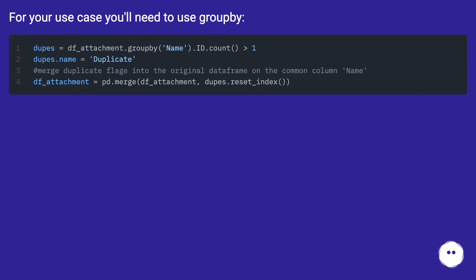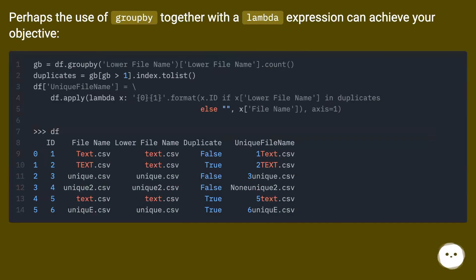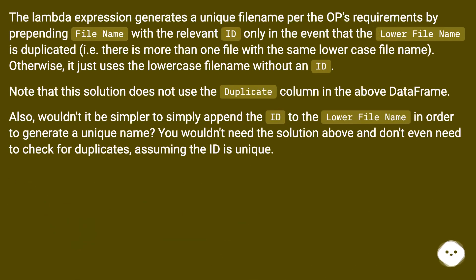For your use case you'll need to use groupby. Perhaps the use of groupby together with a lambda expression can achieve your objective. The lambda expression generates a unique filename for the requirements by prepending the filename with the relevant ID only in the event that the lower filename is duplicated, i.e. there is more than one file with the same lowercase filename. Otherwise, it just uses the lowercase filename without a name.